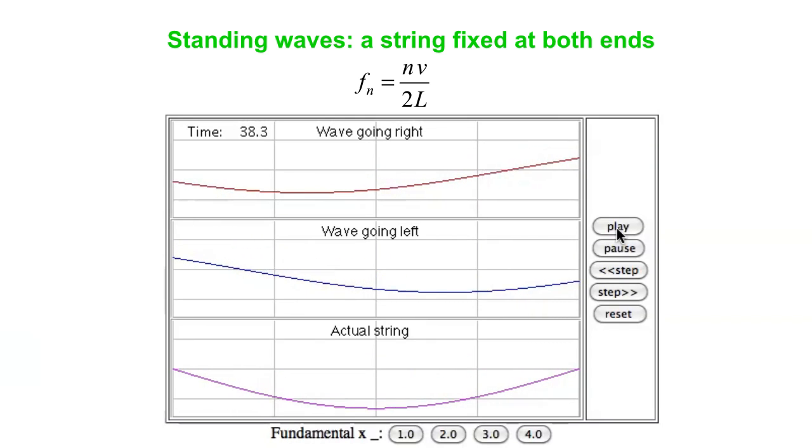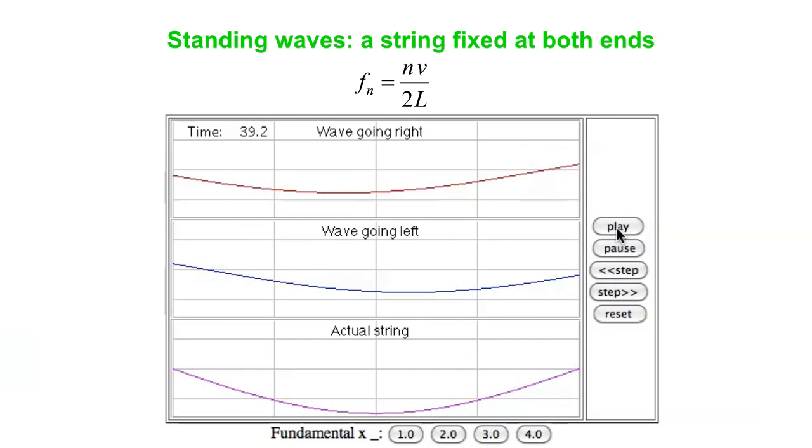That's what we call a standing wave. On the string itself, it looks like there's nothing traveling left or right. In fact, there's a wave traveling left and a wave traveling right, but they're identical, and so you get a standing wave.